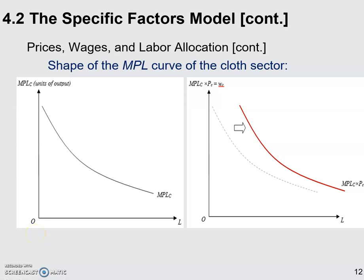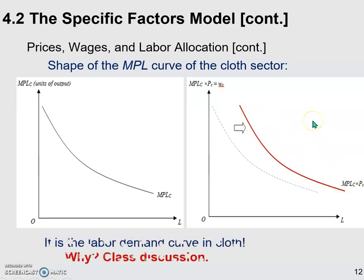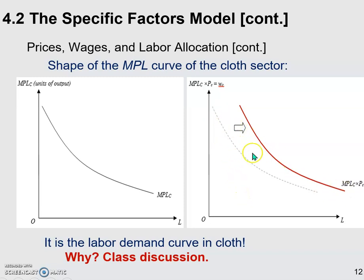In the previous video, we already said that MPLC times PC — this red curve — is the labor demand curve in the cloth industry. Similarly, we can derive the labor demand curve in food. As you could imagine, it's going to be downward sloping, very similar to this one for cloth.